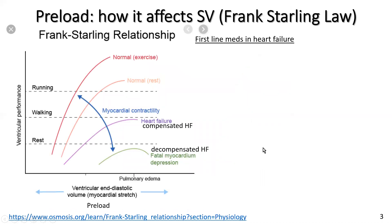The Frank-Starling law is defined as the ventricular performance — in other words, stroke volume, the amount of blood pumped out of the ventricle, the pumping chamber, for each beat of the heart. That has a relationship with the amount of filling of that ventricle, which is called ventricular end-diastolic volume — the amount of blood in the ventricle at the end of the relaxation phase, the filling phase, just before it pumps. What it pumps out is called the ventricular performance or stroke volume. So the x-axis is really talking about preload.